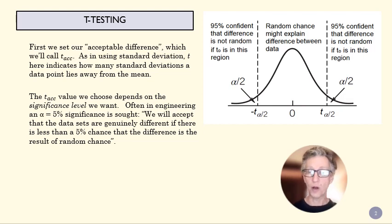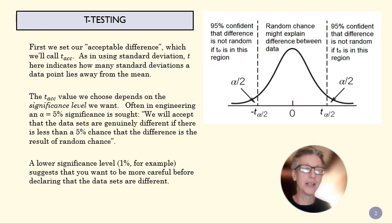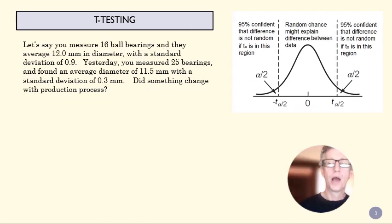So here, when we choose our T-value, we want to depend a significance level. How strict do I want to be about determining that this can't be just random variation? So in engineering, we might say we want an alpha of 5%. And what that means is we'll expect that these two data sets are genuinely different if there's less than a 5% chance that the difference is the result of random chance. So now that we know what our alpha is going to be, we're going to go with 5% or a 95% confidence level. Let's work through an example.